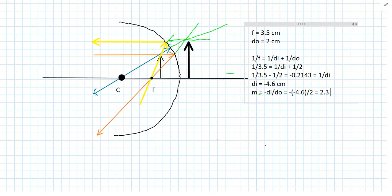So, now you know how to find image location and uprightness and magnification due to an object in front of a concave mirror, whether the image is a real one or a virtual one.